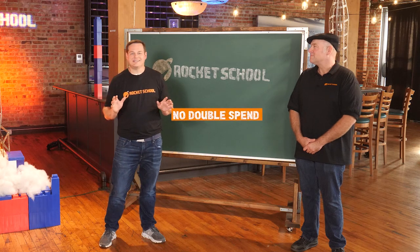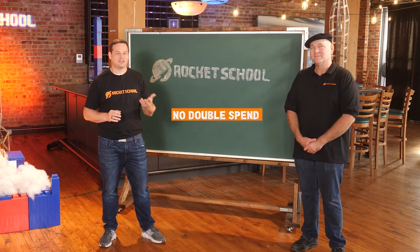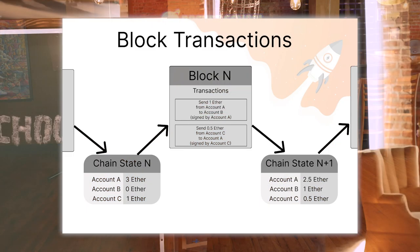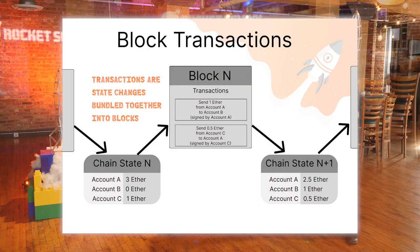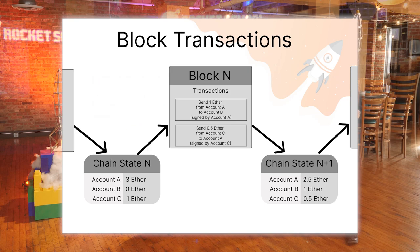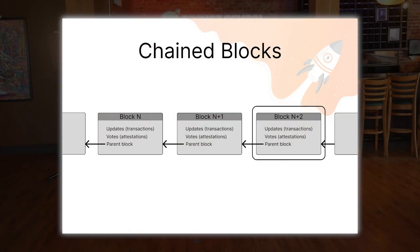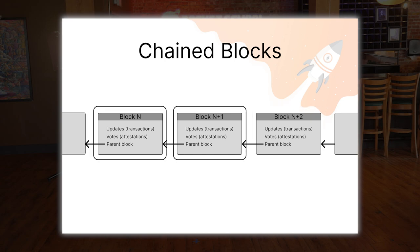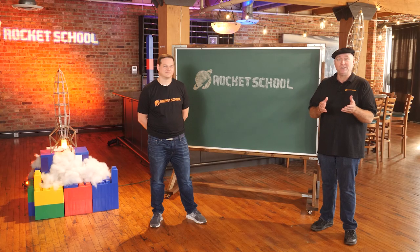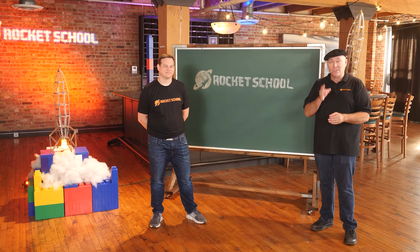And one example of a rule might be: no one can send the same money twice to two different people. They are called blockchains because those state changes — called transactions — are grouped together into bundles called blocks, which are chained one after the other in a mathematically verifiable way.